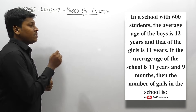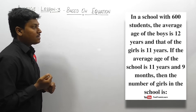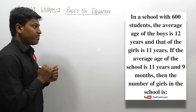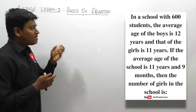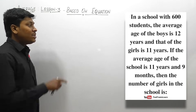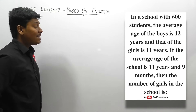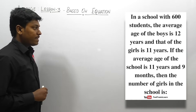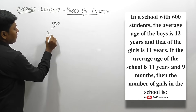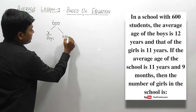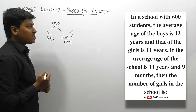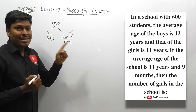Question number four: in a school with 600 students, the average age of boys is 12 years and that of girls is 11 years. If the average age of the school is 11 years and 9 months, find the number of girls. Out of 600 students, some are boys and some are girls, but we don't know how many of each. The total average age of the school is 11 years and 9 months, and our target is to find the number of girls.